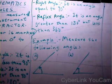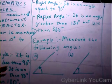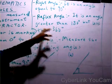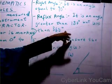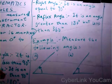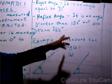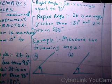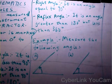The next one is a reflex angle. A reflex angle is an angle greater than 180 degrees but less than 360 degrees. For example, 200 degrees and 350 degrees are reflex angles.